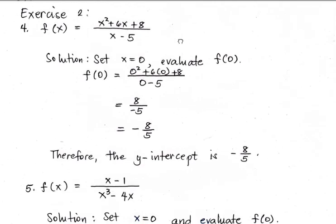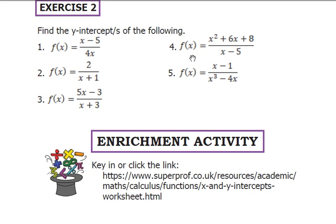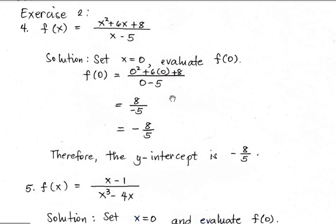For Number 4, f(x) equals (x squared plus 6x plus 8) all over (x minus 5). Substitute x equals 0: f(0) equals (0 plus 0 plus 8) all over (0 minus 5), which is negative 8 over 5. So the y-intercept is negative 8/5.